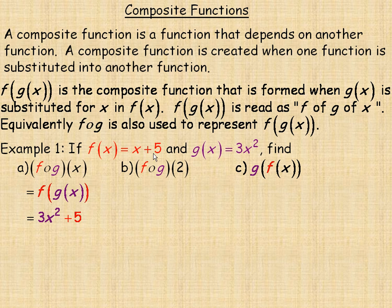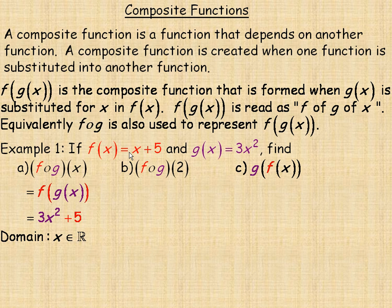Notice that the f function says whatever x is, you add 5 — well, x is now 3x squared, the g of x function, so it's the g of x function plus 5. This composite function's domain is the entire set of real numbers. The original f of x is a straight line with slope 1 and y-intercept 5, defined for all real numbers. The g of x is a parabola with vertex at the origin opening upward, so its domain is also all real numbers.